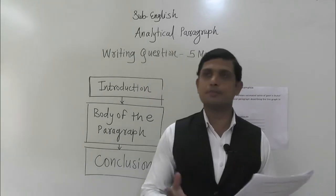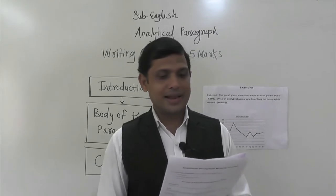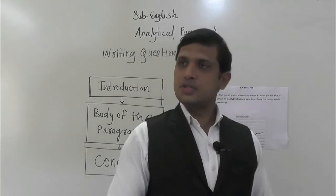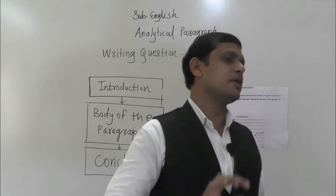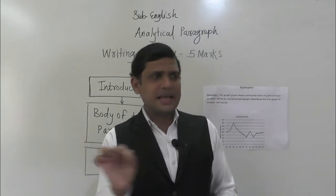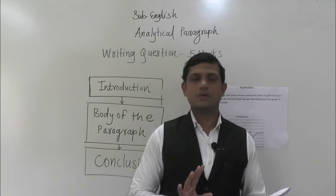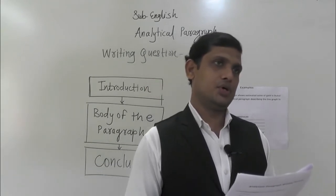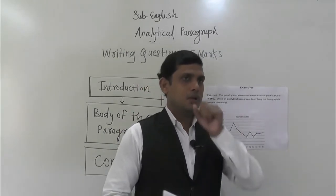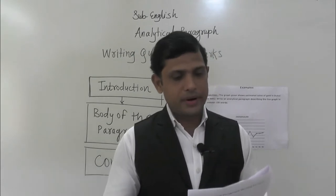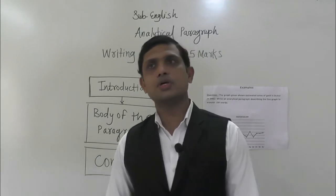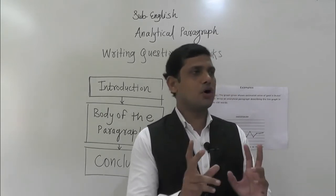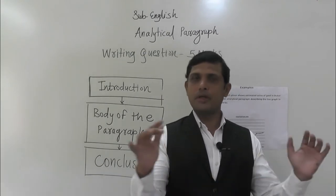The body of the paragraph should contain details of the graph or chart given in the question — completely. You have to write in such a way that not a single confusion remains in the mind of the reader. It is extremely important to choose the significant details to include so that you give proper justification to the paragraph. The body can be broken into two or three sub-paragraphs depending on the information extracted from the graph. If concepts are big, you can make three paragraphs; if short, one paragraph is enough.